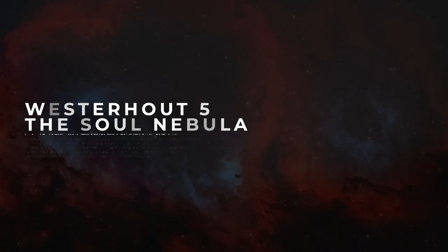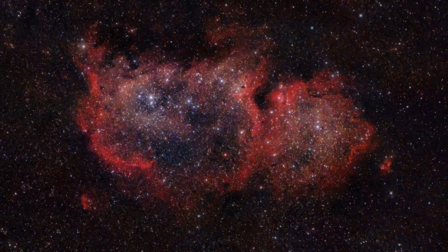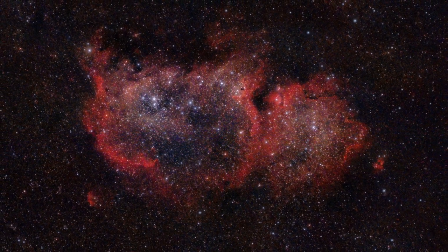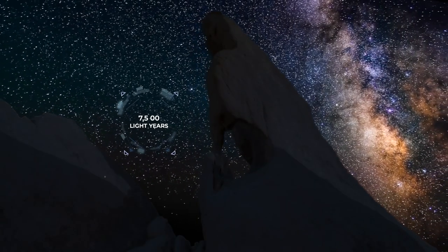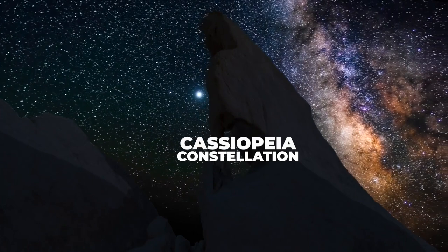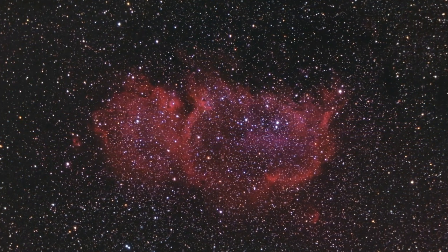Number 6. Westerhout 5, The Soul Nebula. This stunning emission nebula, known as the Soul Nebula, sits 7,500 light years from us and is located within the Cassiopeia constellation. Sometimes called the Embryo Nebula.